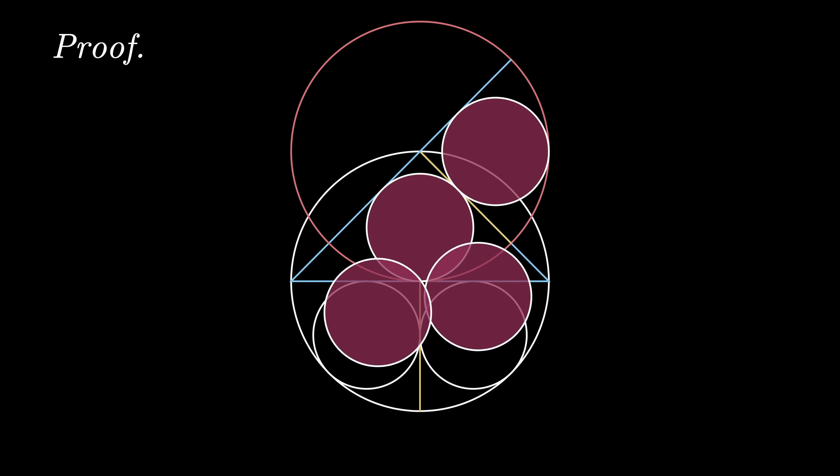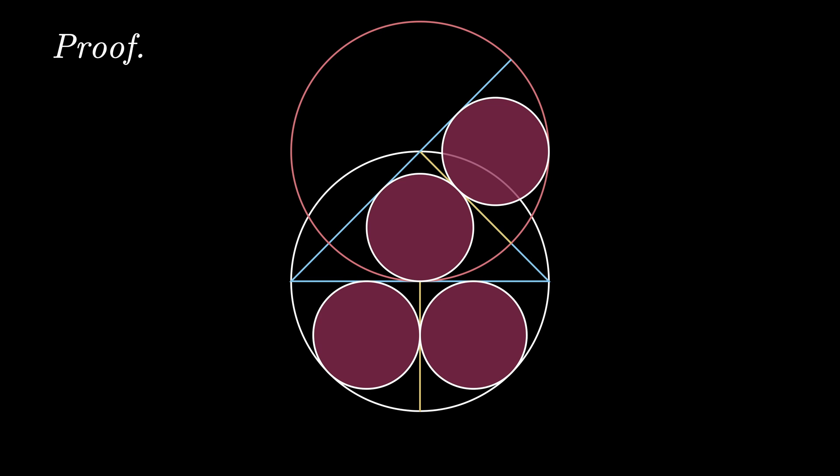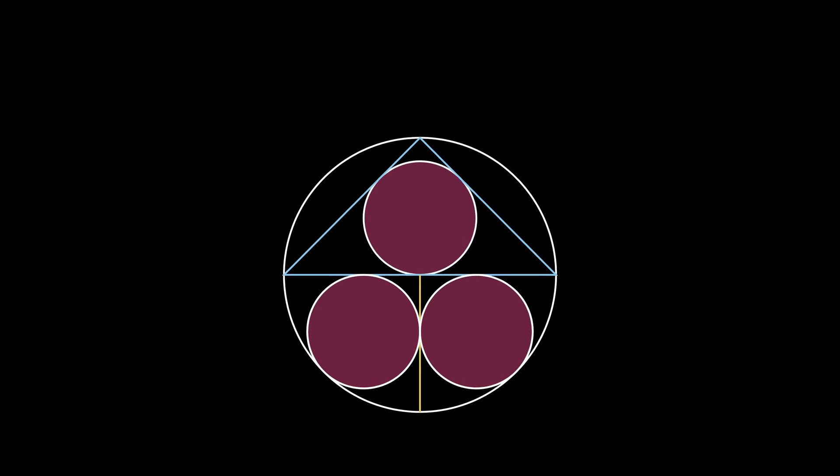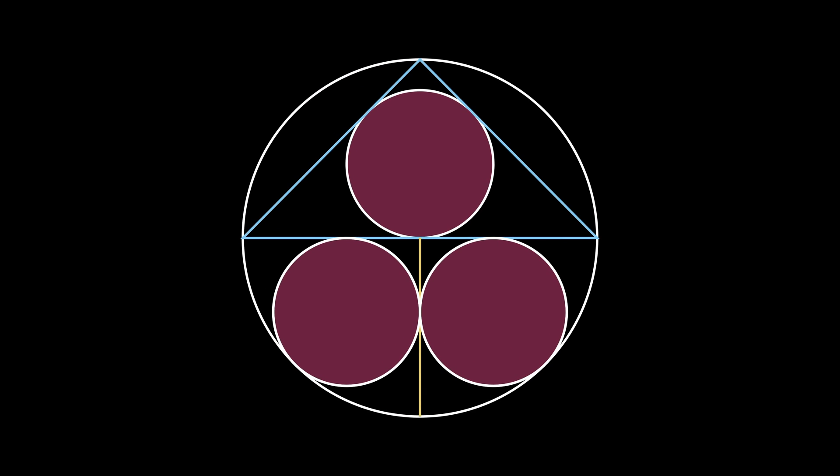Therefore, these two circles are congruent to the original two in the bottom quadrant of the original circle, and this means that all three of the original inscribed small circles are congruent to one another.